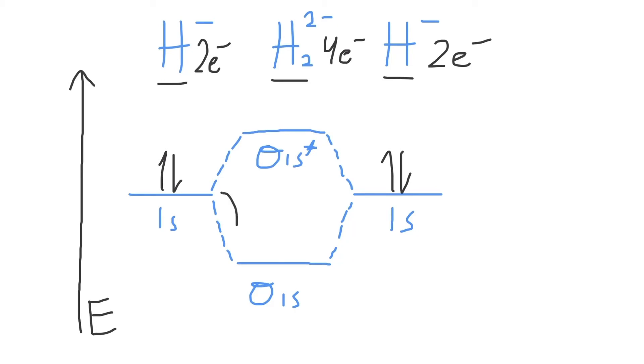Next, we will fill in our molecular orbitals, starting with the lowest energy molecular orbitals first, according to the Aufbau principle. We'll fill in 2 electrons into our bonding molecular orbital to completely fill it up, and then 2 more into our antibonding molecular orbital, which is higher in energy. This is a completed molecular orbital diagram for H2 2-.